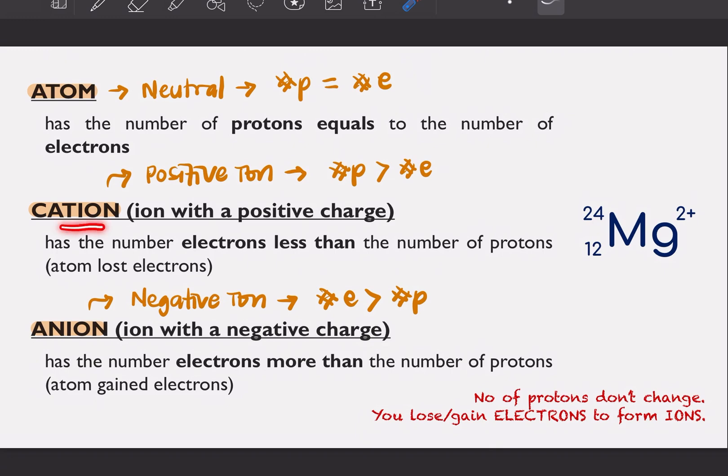For cation pula, cation is an ion with a positive charge. So positive ion. So that means that the number of proton is more than the number of electron. You have more protons than electrons. That means your atom has lost electrons. Dia ada buang electron.